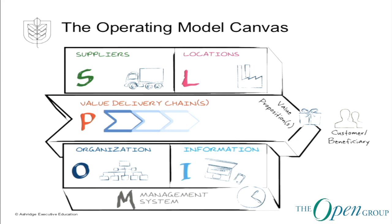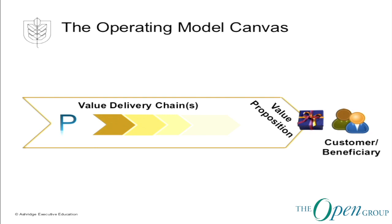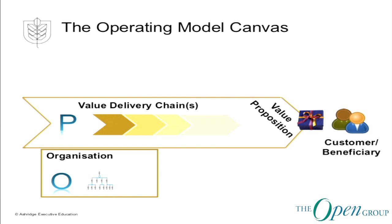This book — Operating Model Canvas — captures these six elements in a canvas format, enabling you to capture very high-level thoughts on a single page to produce a one-page operating model. First is the work that needs to be done to deliver value to the customer or beneficiary — who are the customers, what are we trying to do for them, and what work must we do in order to make them happy? Then there is the people and the organisation they live in: who reports to whom, what decision rights each department and individual has, process ownerships, people models, and cultures.